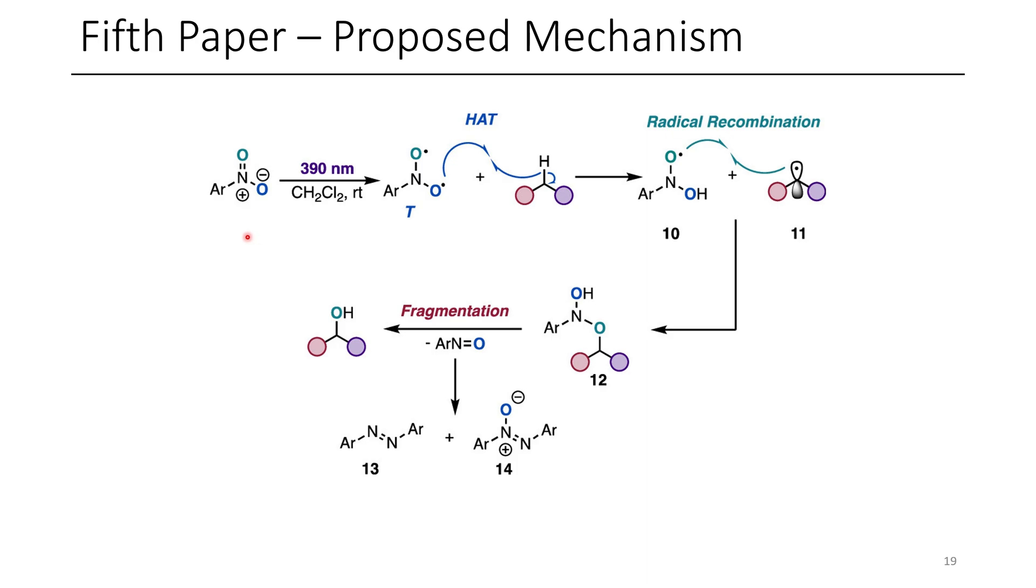The mechanism of this paper is as follows. Initially, the nitroarene is photoexcited to generate this diradical species, which can undergo hydrogen atom transfer, forming a carbon-centered radical. This carbon-centered radical is then able to recombine with the remaining oxygen-centered radical, which can then undergo fragmentation, affording an alcohol. If anybody's looking for a potential project or extension of this, I'd be interested to see if the epoxidation of alkenes could also be accomplished using some sort of nitroarene.